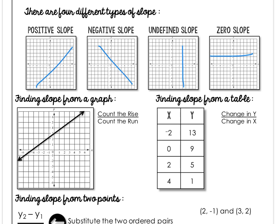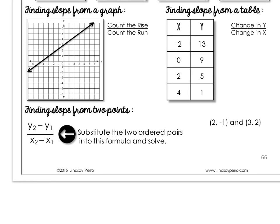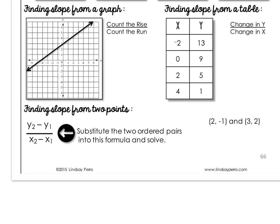To find slope from a graph, you're going to find two good points and then count the rise over the run. In this example, I'm going to use the point at (0, 3) and at (3, 5). I count my rise as 1, 2, and the run as 1, 2, 3. So the slope is 2 over 3.